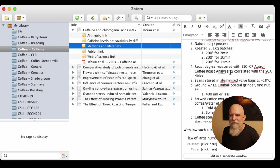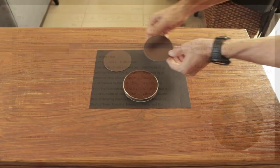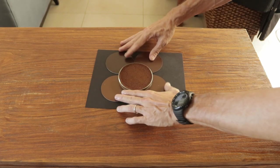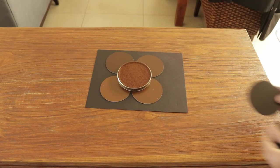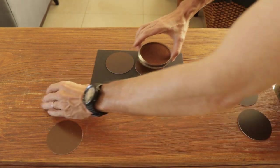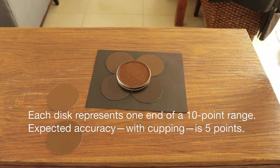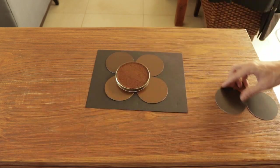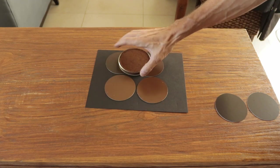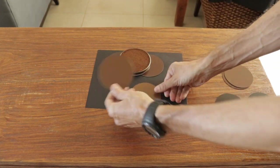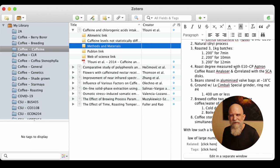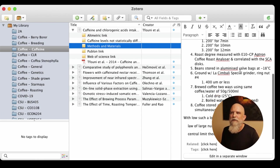And then interestingly, and I'm not really sure that I understand this, but they said they correlated the Agtron with the SCA discs. And if you've never used the discs before, you won't understand why I'm confused, but the discs, each disc represents a range of roasts. And what you do is you can grind the coffee and you set it next to the disc and you decide whether the ground coffee is lighter or darker than the disc. And then based on your understanding, you kind of judge, you kind of gauge or guesstimate the roast degree. So it's not very accurate. So I wouldn't call that a correlation.